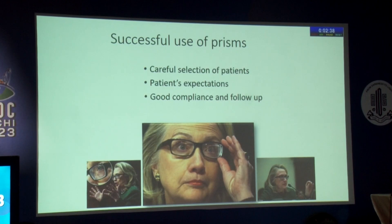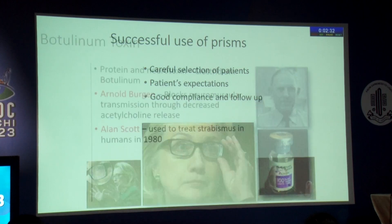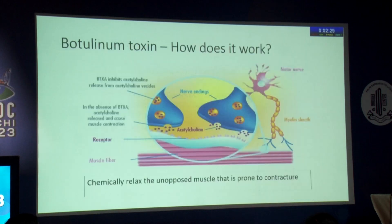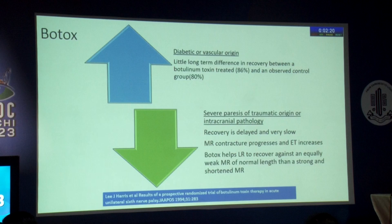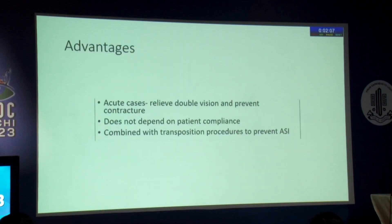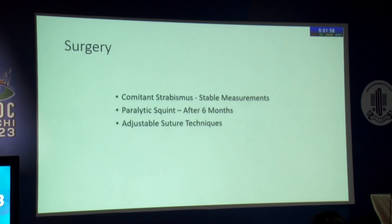Successful use of prisms requires careful patient selection and managed patient expectations, with good compliance and follow-up. Botulinum toxin is trialed in many cases; it chemically relaxes the unopposed muscle prone to contracture. Botox is not found to be of much long-term benefit in cases of diabetic or vascular origin, but in severe paresis of traumatic origin and intracranial pathology it definitely helps. In acute cases it relieves double vision, prevents contracture, does not depend on patient complaints, and can sometimes be combined with transposition procedures to prevent anterior segment ischemia.